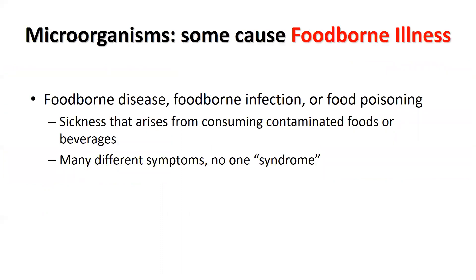There are certain types of microorganisms that pose a health risk and are the causative agents of foodborne illness. Multiple terms are used to describe a sickness that arises from consuming a contaminated food or beverage, and they are listed here for reference. There is no one syndrome that encompasses all foodborne illnesses. Typical symptoms often associated are nausea, vomiting, and diarrhea; however, there are many other symptoms that can be associated with a foodborne illness.